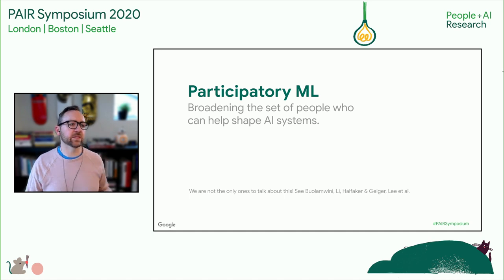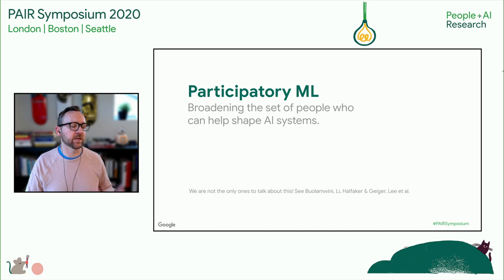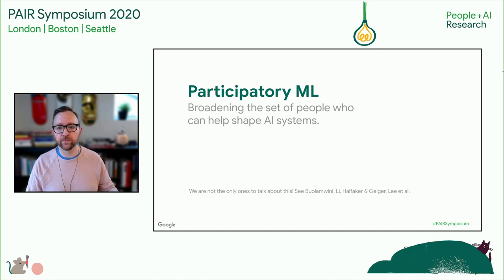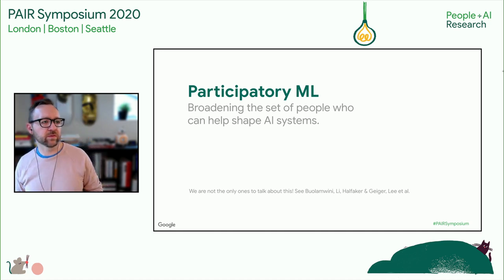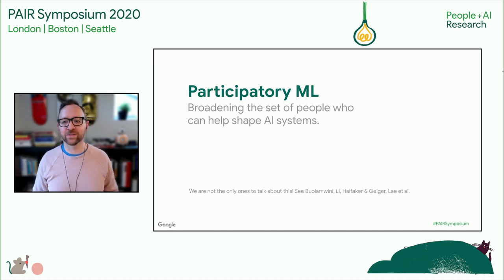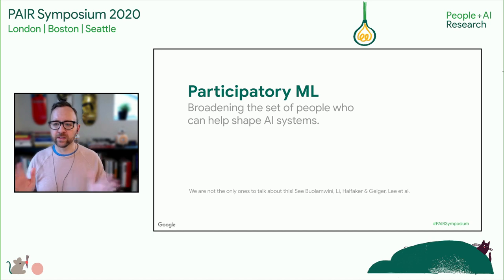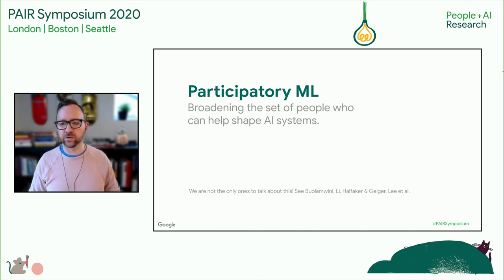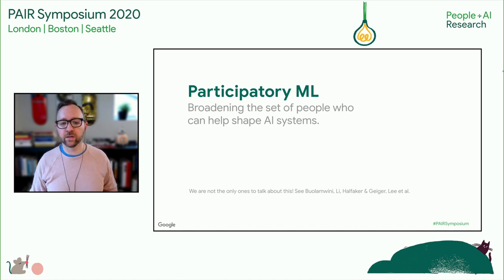It's framed in this idea of participatory machine learning, which we think of as a sub-application of the broader field of participatory research or participatory design. This is really aligned with our third pillar — bringing in a broader set of people who can help shape AI and machine learning systems. We're not the first people to talk about this; there have been great researchers who have brought this up, and we try to think about what is our unique contribution.